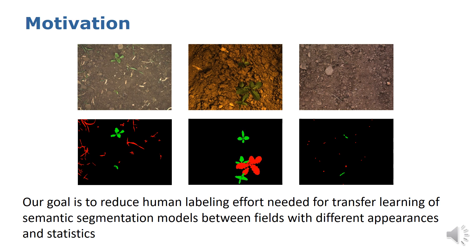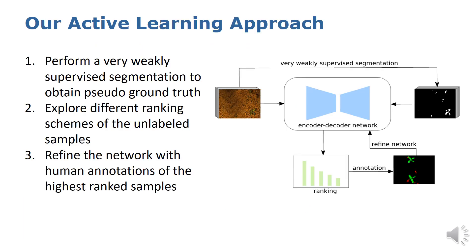Models have to be refined with new labels and our goal is to reduce this human labeling effort. You can see here an overview of our active learning approach. We first perform a very weakly supervised segmentation to obtain foreground masks that act as pseudo-ground truth. These are then fed into a previously trained encoder-decoder segmentation network to produce different ranking measures of the unlabeled images. One such ranking scheme is then applied and a human annotates the highest ranking samples, which are then used to refine the network.